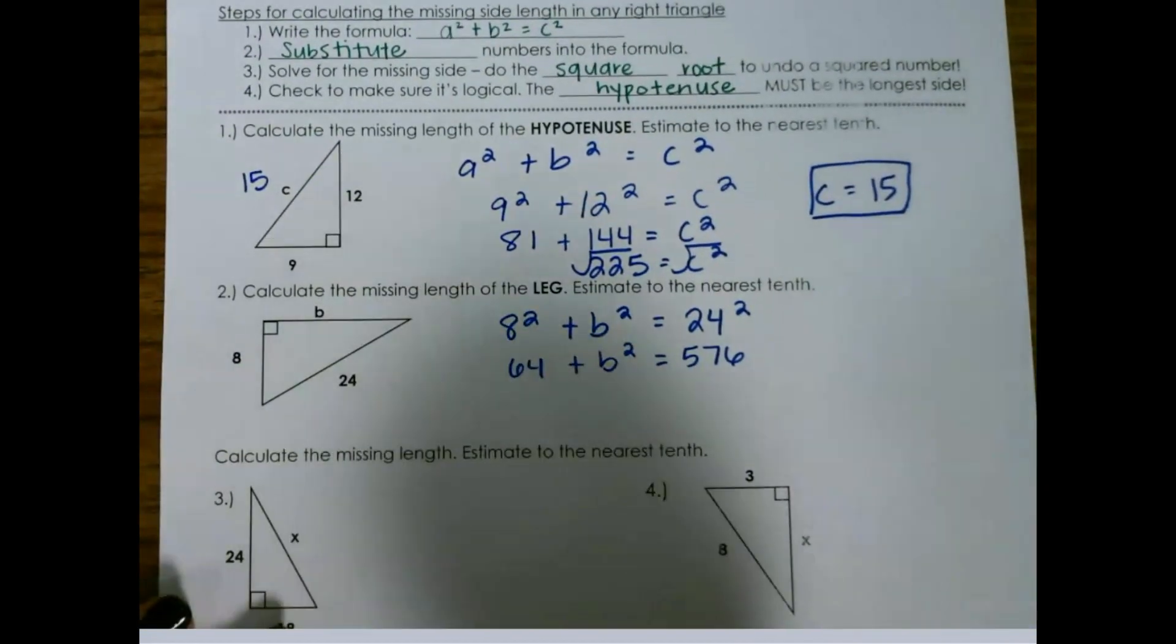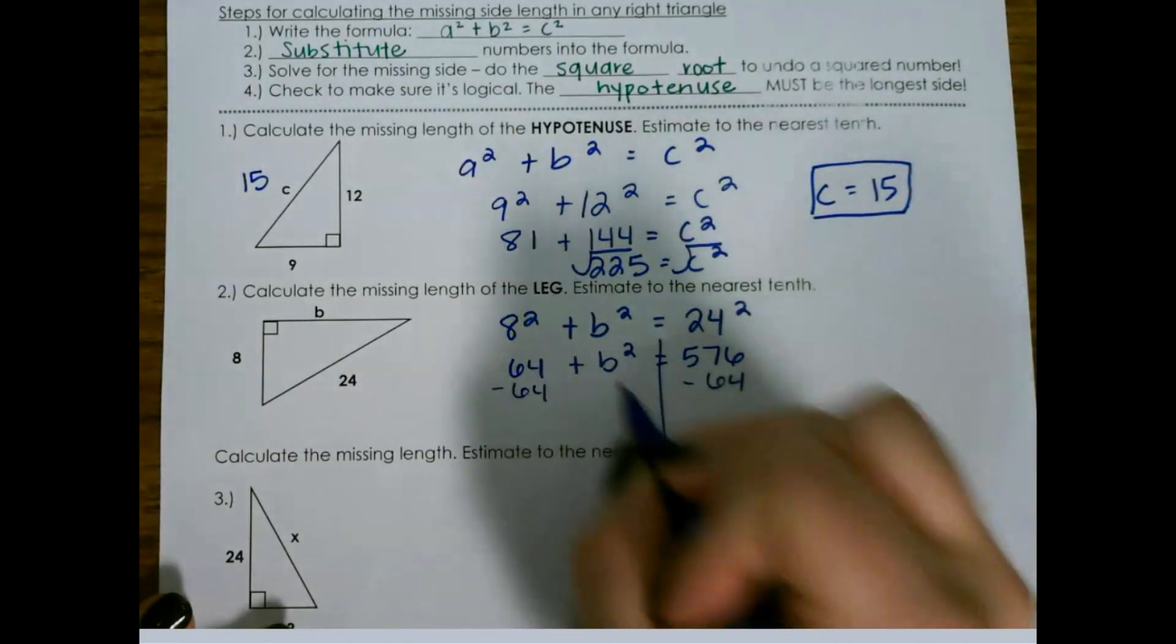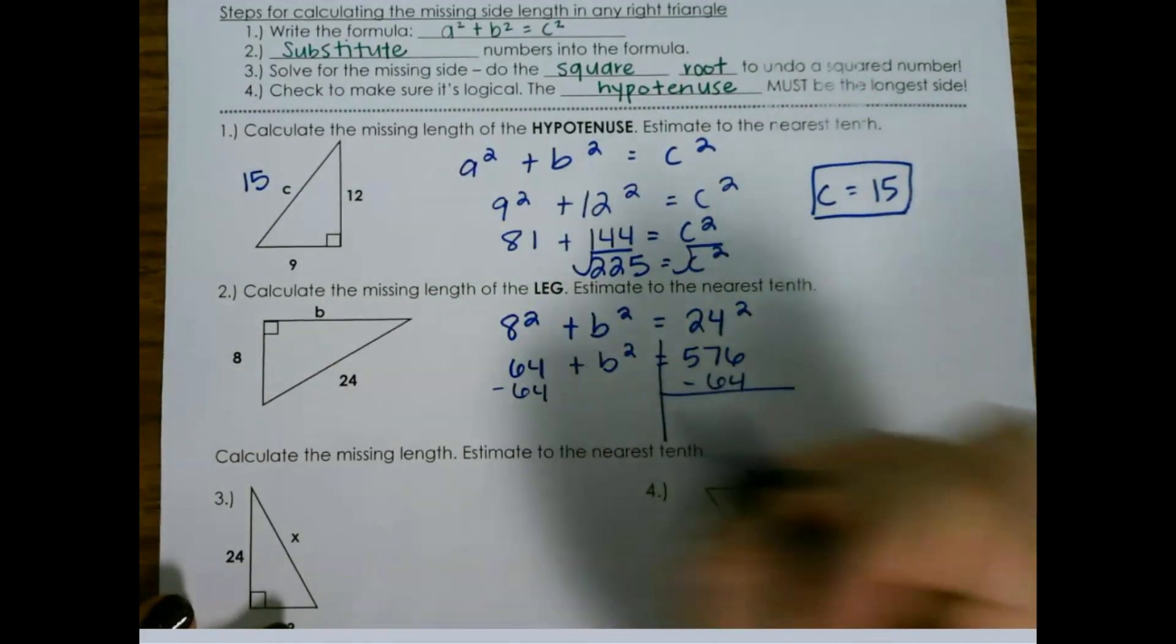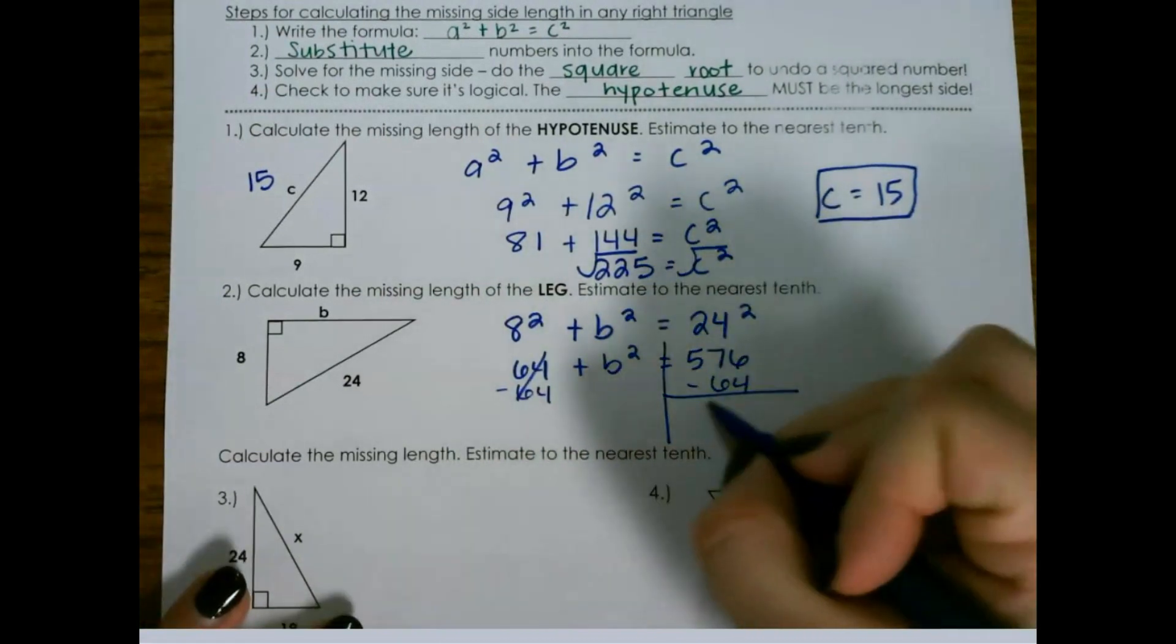So now we need to solve this like an equation. I need to subtract 64 from both sides because I want to get b all by itself. So 576 minus 64 is 512.